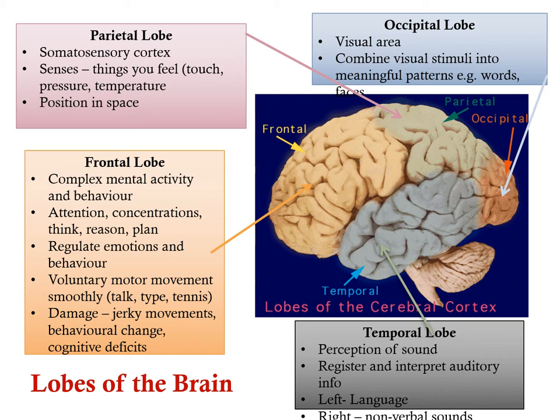The frontal lobe involves complex mental activity and behavior — attention, concentration, thinking, reasoning, and planning are all part of the frontal lobe. It also regulates emotions and behavior and controls voluntary motor movements. If the frontal lobe is damaged, there will be jerky movements, behavioral change, and cognitive deficits.